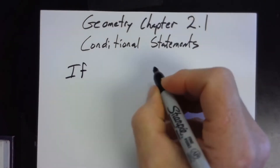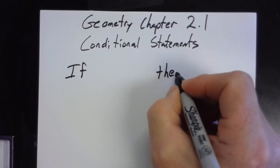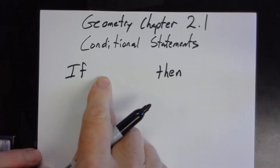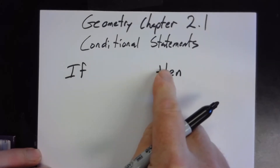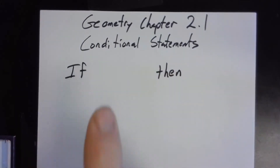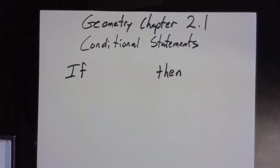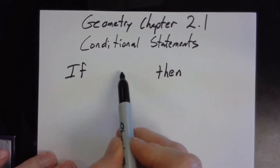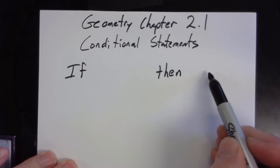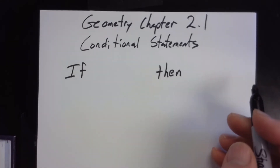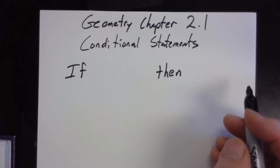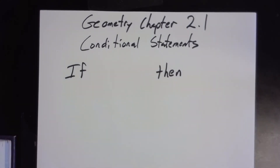Every single conditional statement follows this if-then pattern. If it's cloudy outside, then it's going to rain. Now, every single conditional statement is not necessarily true. For example: if you're in Mr. Collar's class, then he really likes you — that was obviously true, but not all of them are true.